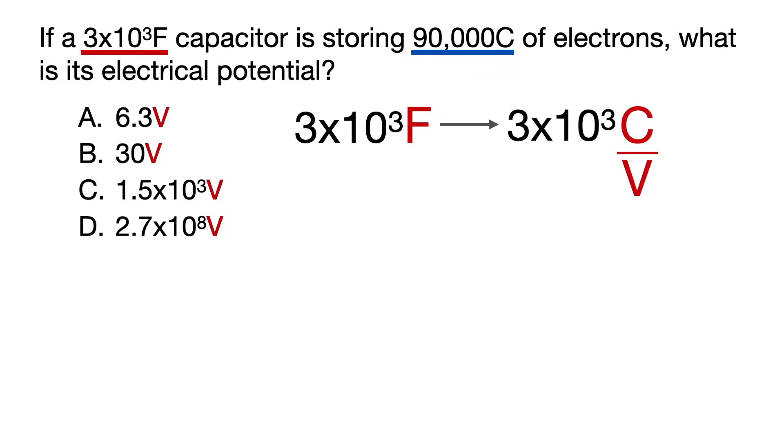So now, let's start dimensional analysis with 3 times 10 to the third coulombs per volts. But because we need volts in the answer, we have to flip this value, bringing volts to the top and 3 times 10 to the third coulombs to the bottom, remembering that the number always sticks to the numerator of the unit.